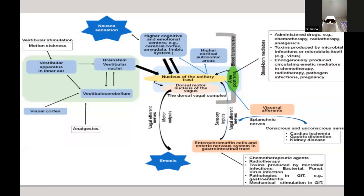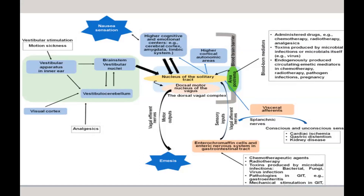Because of motion sickness, vestibular stimulation occurs, which results in activation of the vestibulocerebellum, which then sends signals to the nucleus of the solitary tract. Another mechanism could be a sense of taste, smell, or pain, which can lead to activation of the cerebral cortex, amygdala, or limbic system, which later sends signals to the nucleus of the solitary tract.